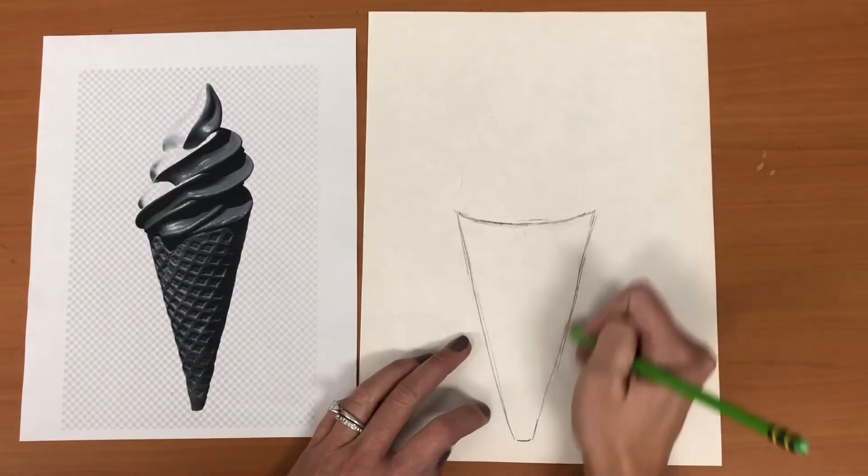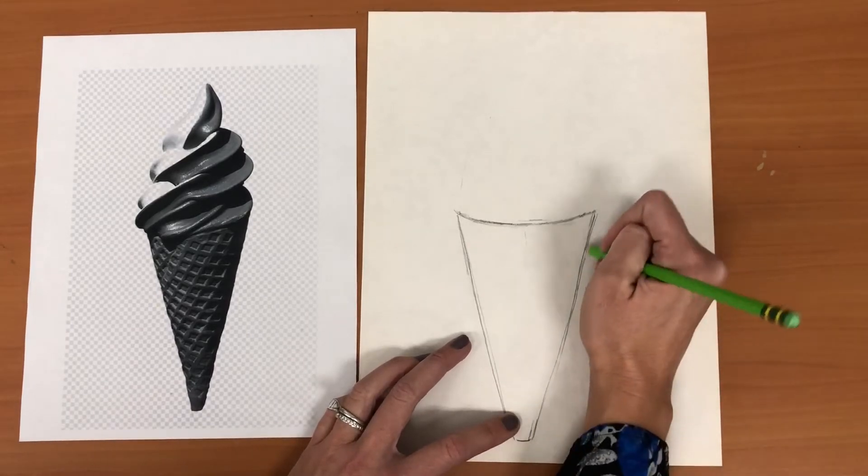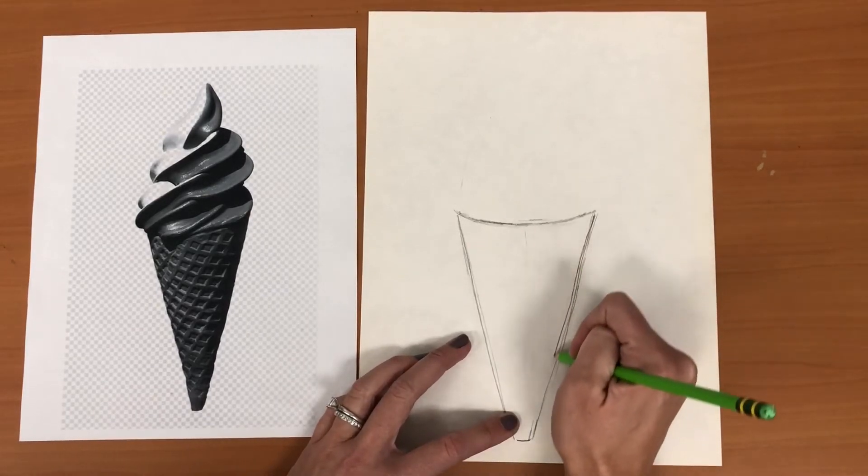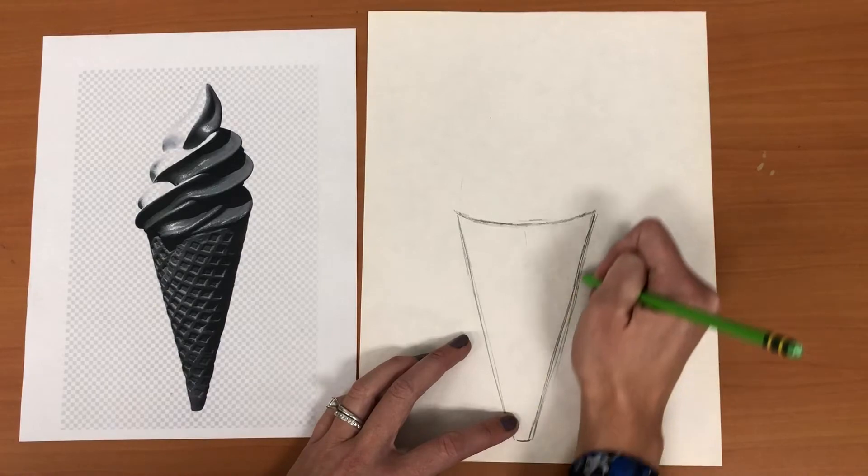So I'm gonna even out my cone. I think it actually comes a little more narrow at the bottom so I'm going to adjust that. Okay so work on your cone shape right here.